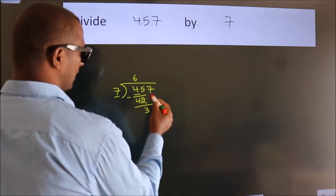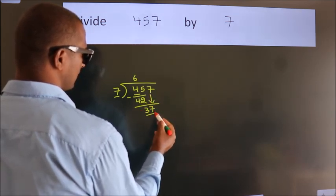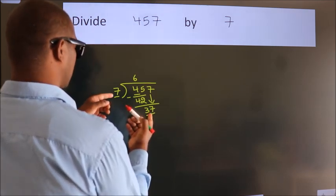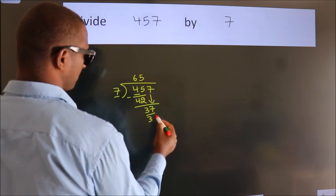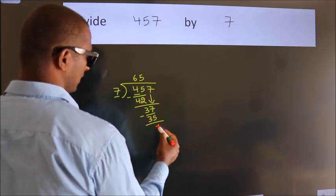After this, bring down the beside number. So, 7 down, making 37. A number close to 37 in the 7 table is 7 times 5, which is 35. Now we subtract. We get 2.